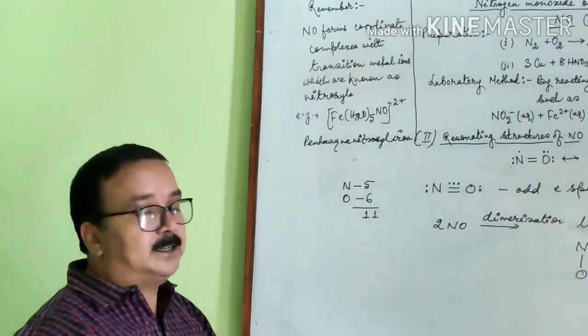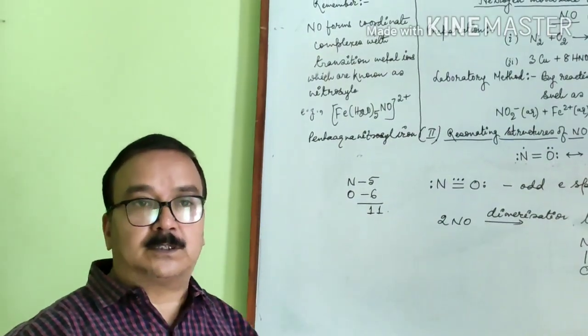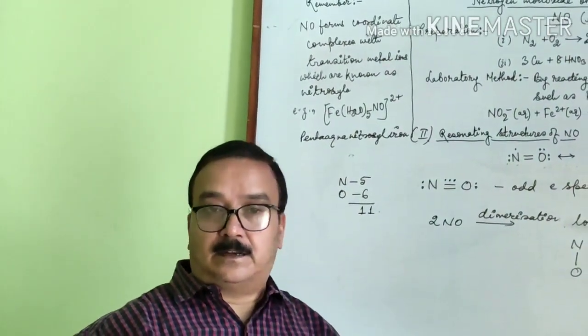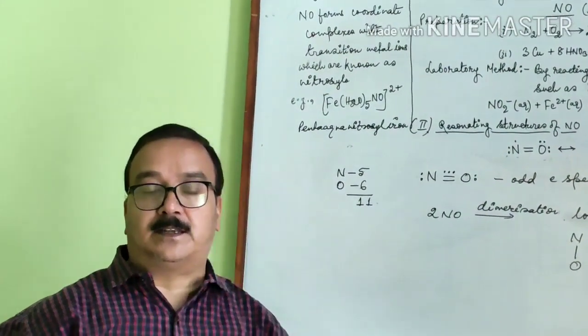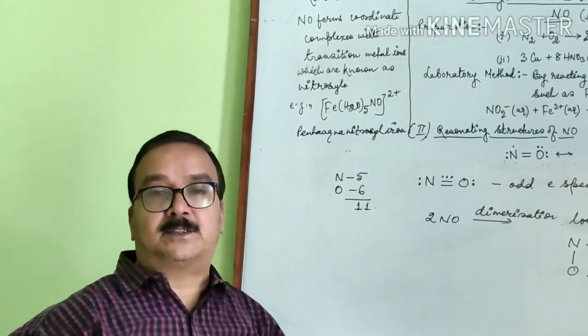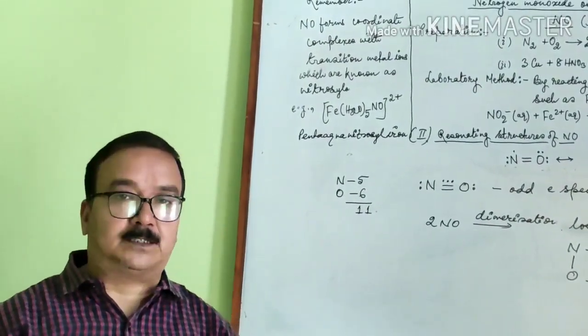So we can say that nitric oxide is used as a ligand. Later on you will discuss what is ligand and it forms complexes with transition metal ions.